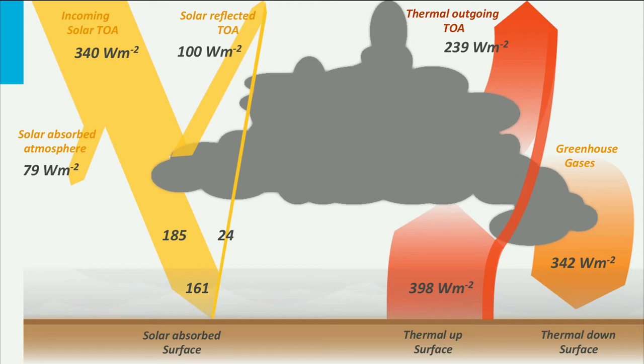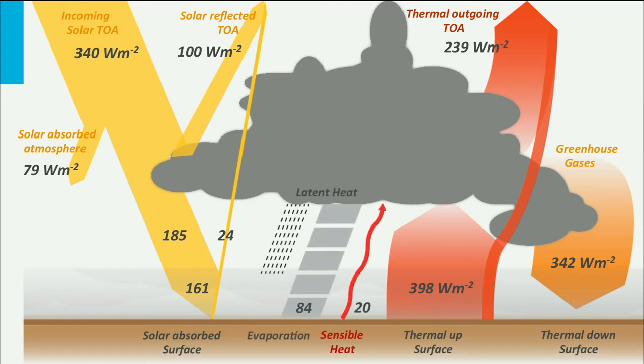Under equilibrium conditions the earth's surface will lose as much energy as it will gain. How does the surface of the earth lose its heat? There are several mechanisms for this. One: it will radiate thermal infrared radiation. Some absorbed energy will be used to evaporate water which is then released into the atmosphere. The energy contained by the water vapor molecules is called latent heat. Energy is also transported into the atmosphere by conduction. We call this sensible heat.